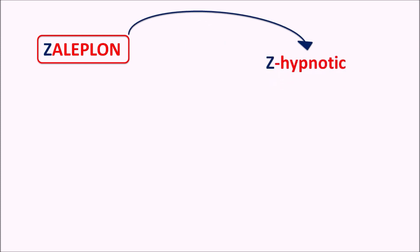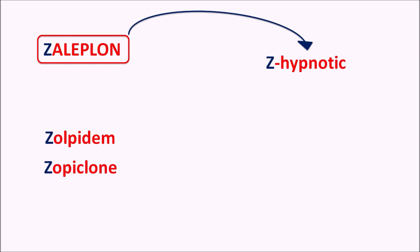Hi everyone. Today in this video we are going to discuss about Zaleplon. What is this drug Zaleplon? The prefix Z indicates this drug is a Z-hypnotic. We have a few other drugs starting with the letter Z such as Zolpidem and Zopiclone. All these are Z-hypnotics and they are also classified as non-benzodiazepine hypnotics.